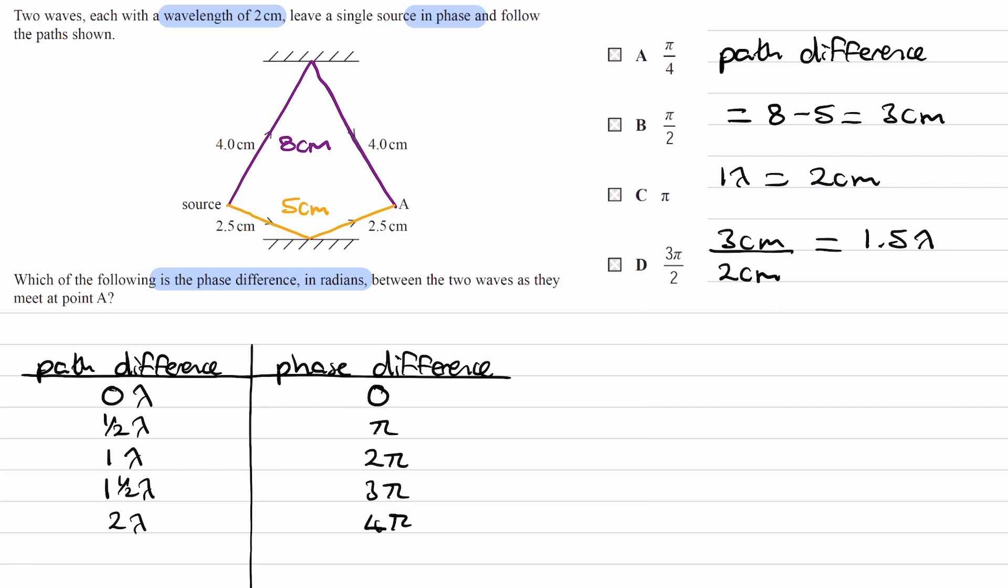So if we look at what we have here, we have a path difference of 1.5 wavelengths. That will correspond to a phase difference of 3π. But if you look at our options, none of these are 3π. So this is not incorrect. Our phase difference can be expressed as 3π.